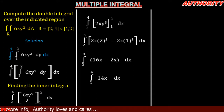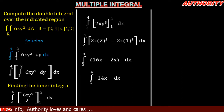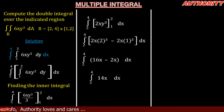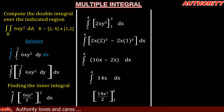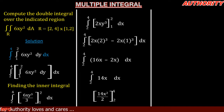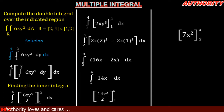The inner integral is simplified. Now let's evaluate the outer integral. Integrating 14x with respect to x gives 14x² over 2, evaluated from 2 to 4. Since 14 divided by 2 is 7, we have 7x² evaluated from 2 to 4.